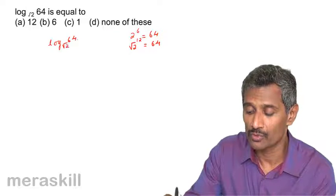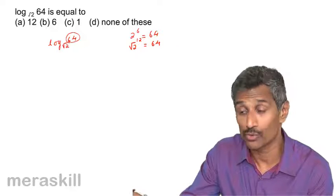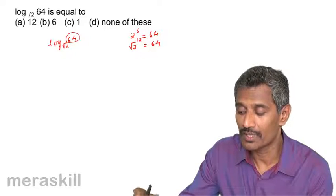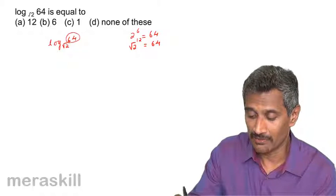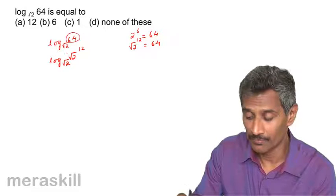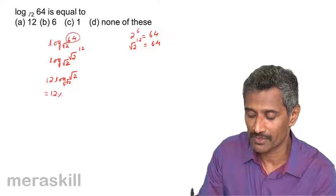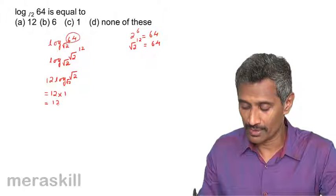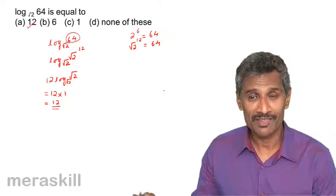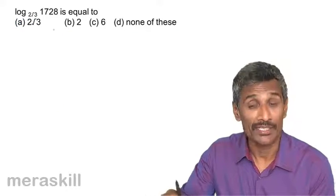So 64 can be written as (√2)¹², and this is to the base √2. That gives us 12 log √2 to the base √2, which equals 12 into 1, which is 12. So log 64 to the base √2 equals 12.